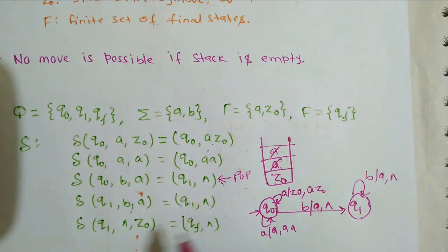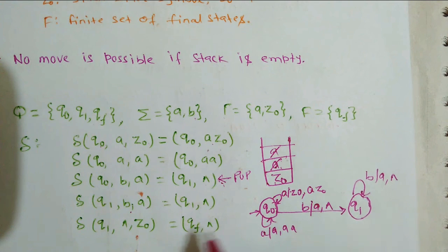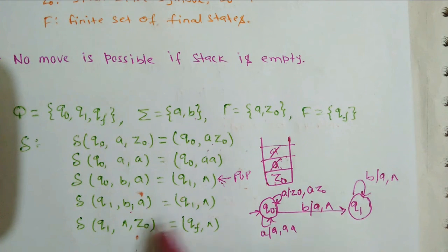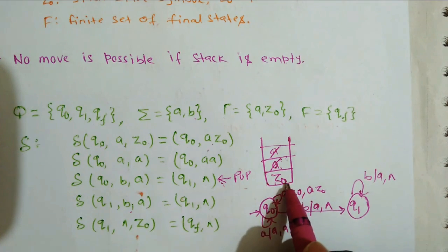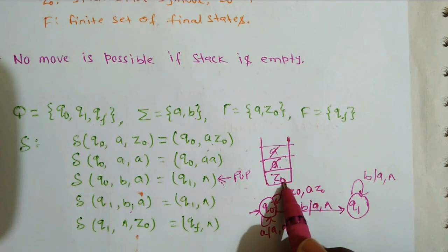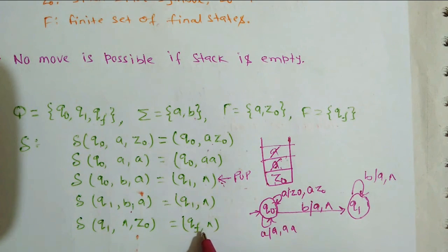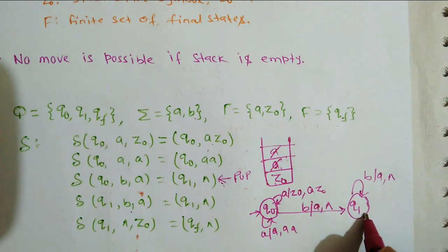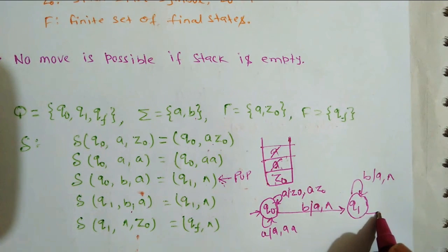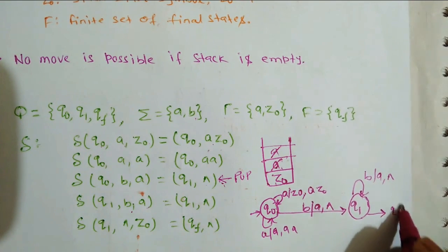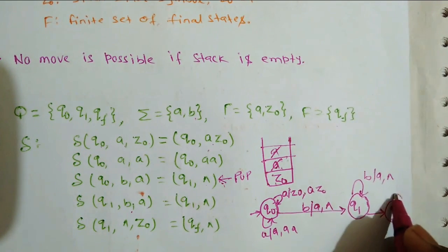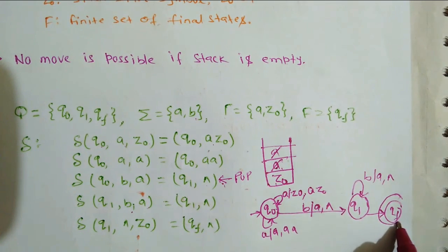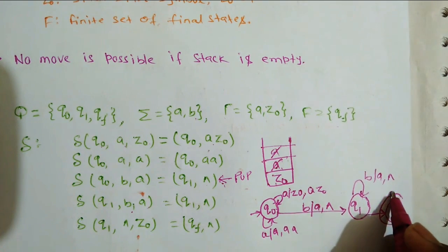The final transition says: on state q1, if there is no input symbol and the top of the stack is z-naught, then you move to the final state. The final state can be represented by two circles.